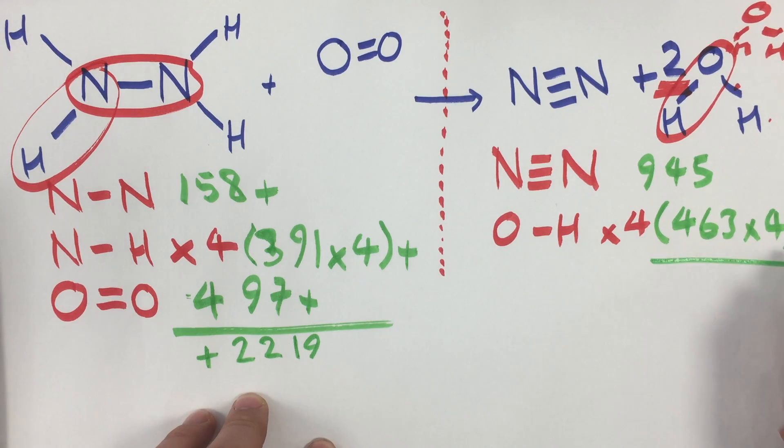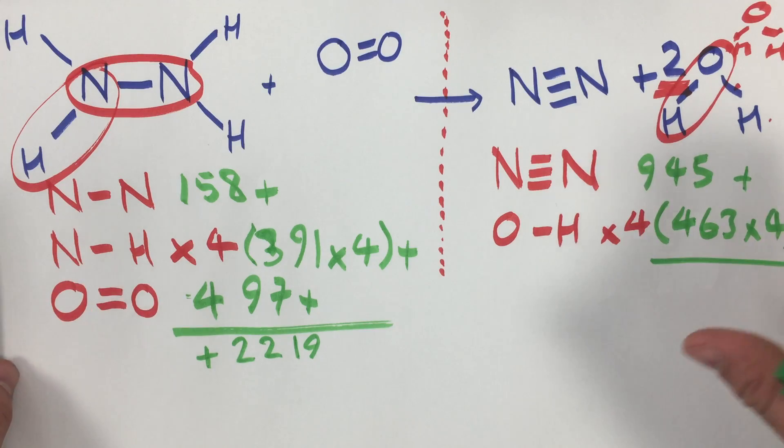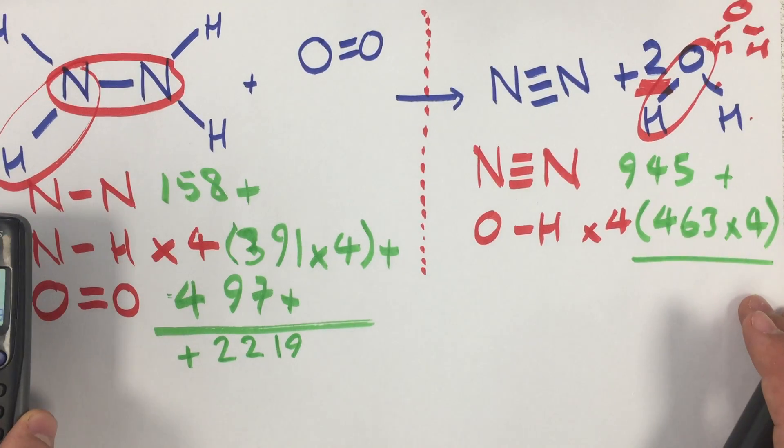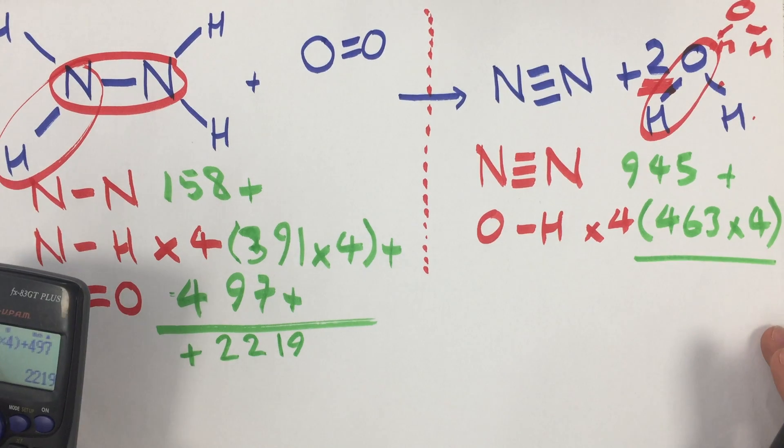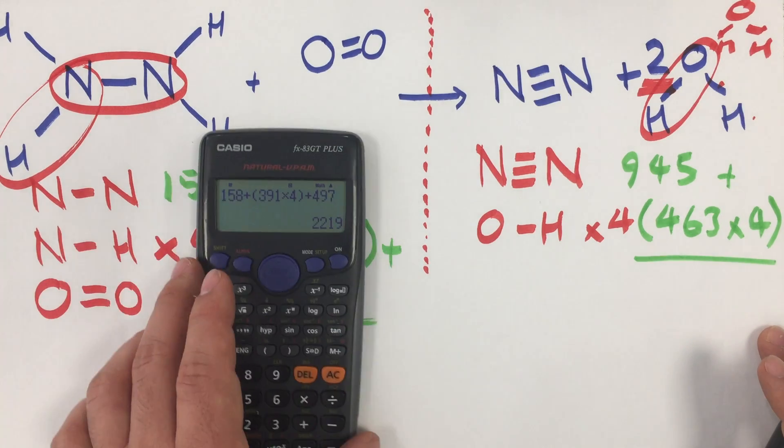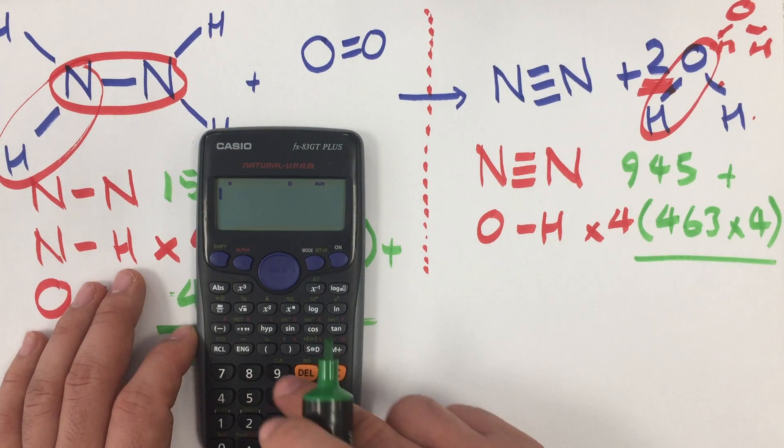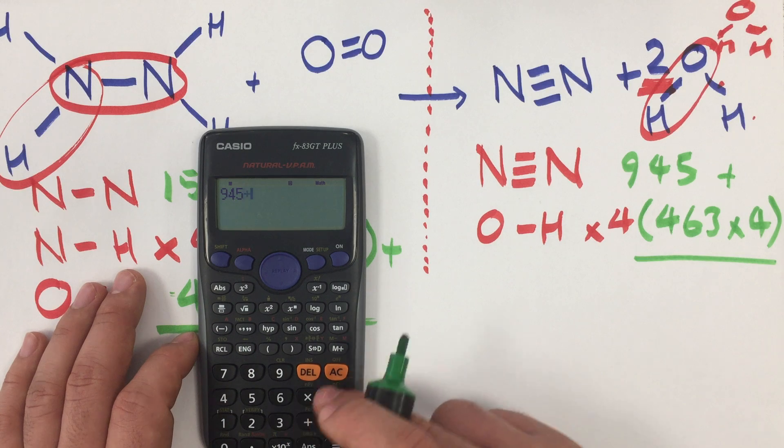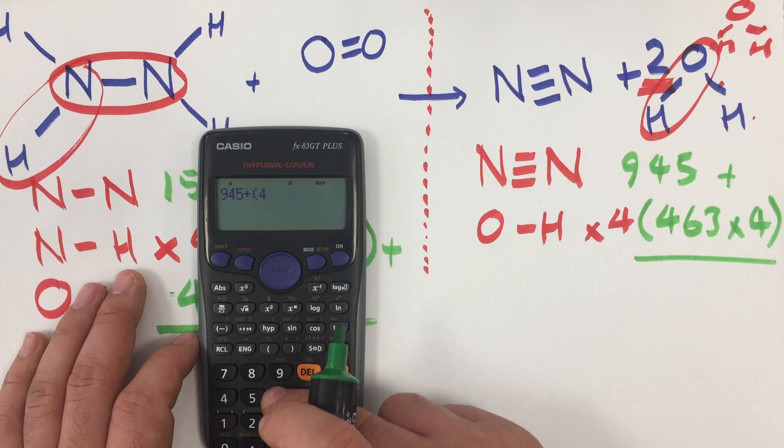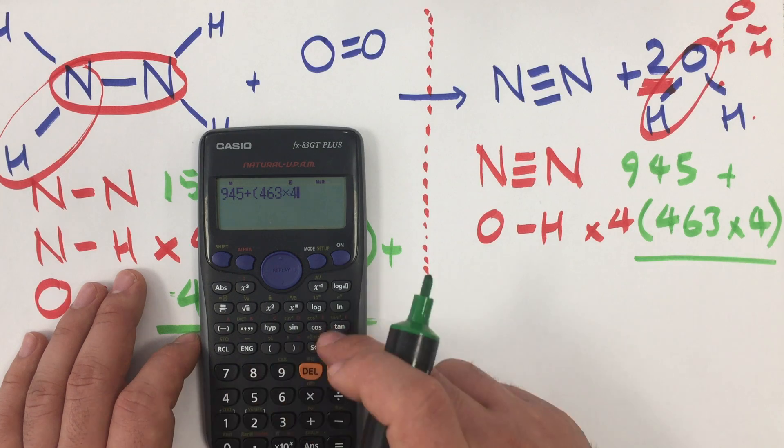I then need to do the same thing on this side and add up how much energy will be released when I make these bonds. So same procedure again, so 945 plus 463 times four gives me 2,797.